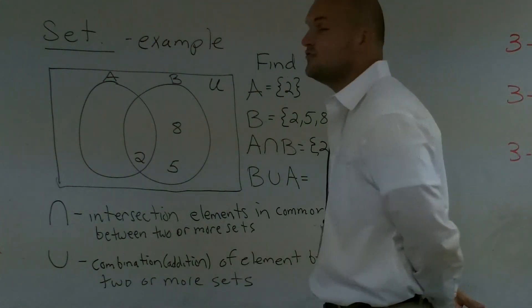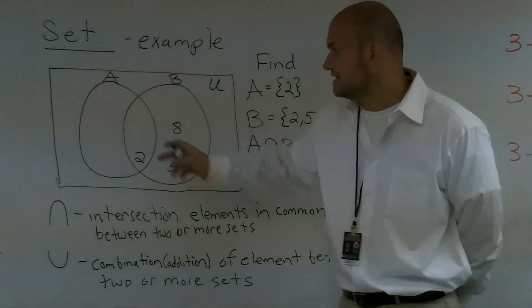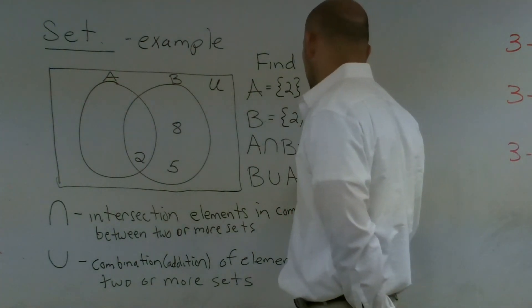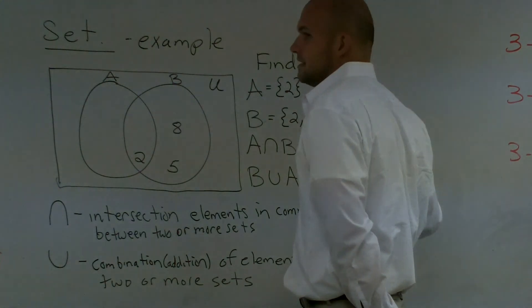Two, five, and eight. It's going to be everything that's in A plus everything else that's in B. So for this example, it's going to be two, five, and eight.